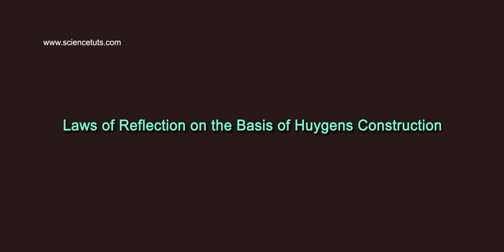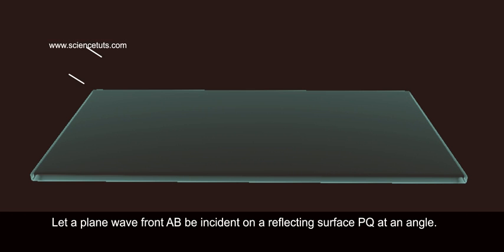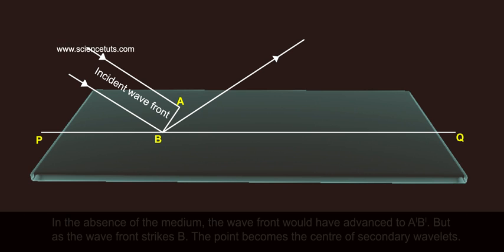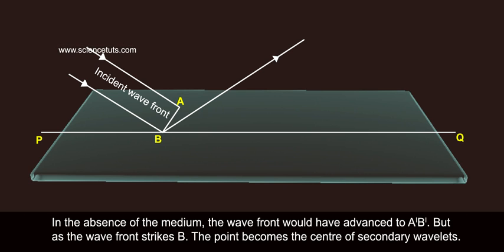Laws of Reflection on the Basis of Huygens' Construction. Let a plane wave front AB be incident on a reflecting surface PQ at an angle. In the absence of the medium,